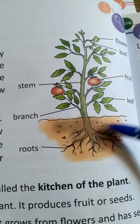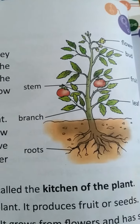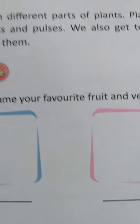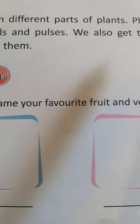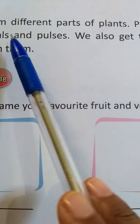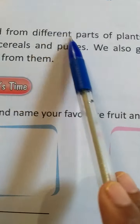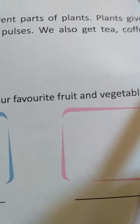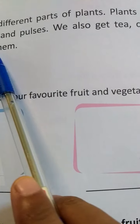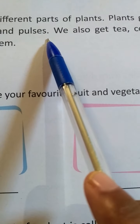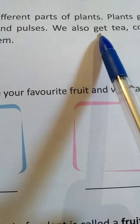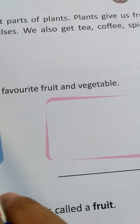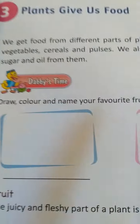We get food from different parts of plants. Plants give us fruit, vegetables, cereals and pulses. We also get tea, coffee, spices, sugar and oil from them.